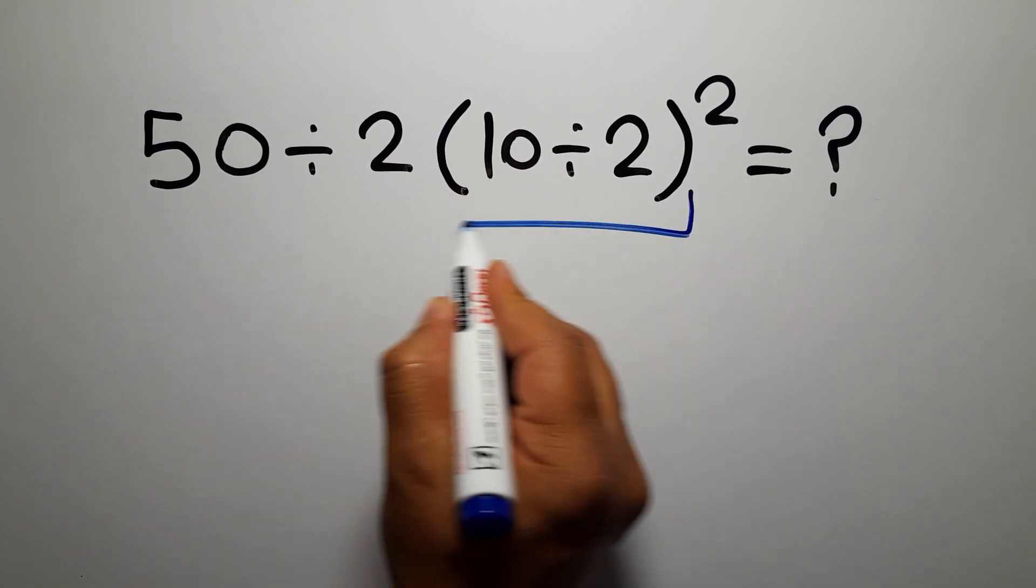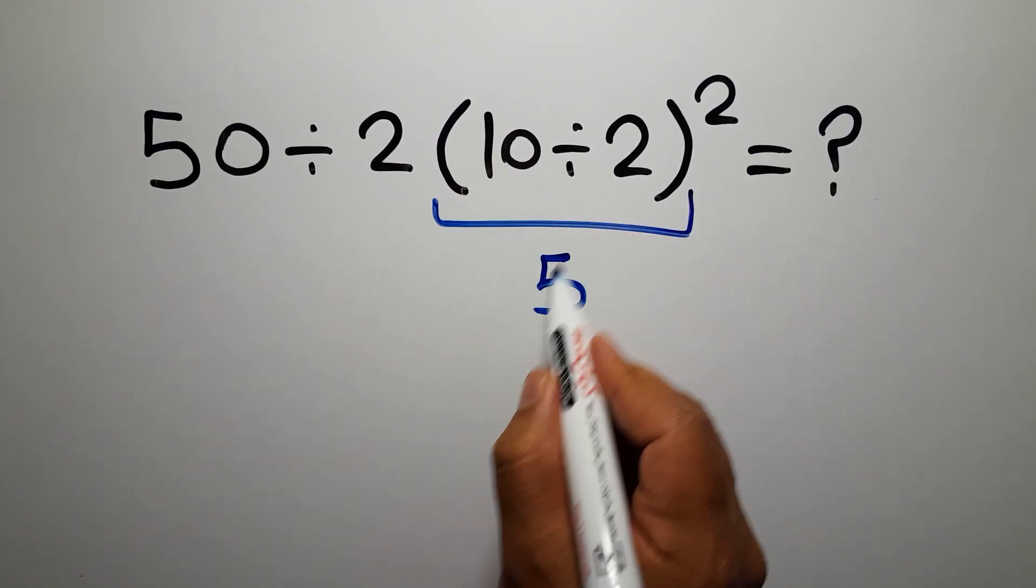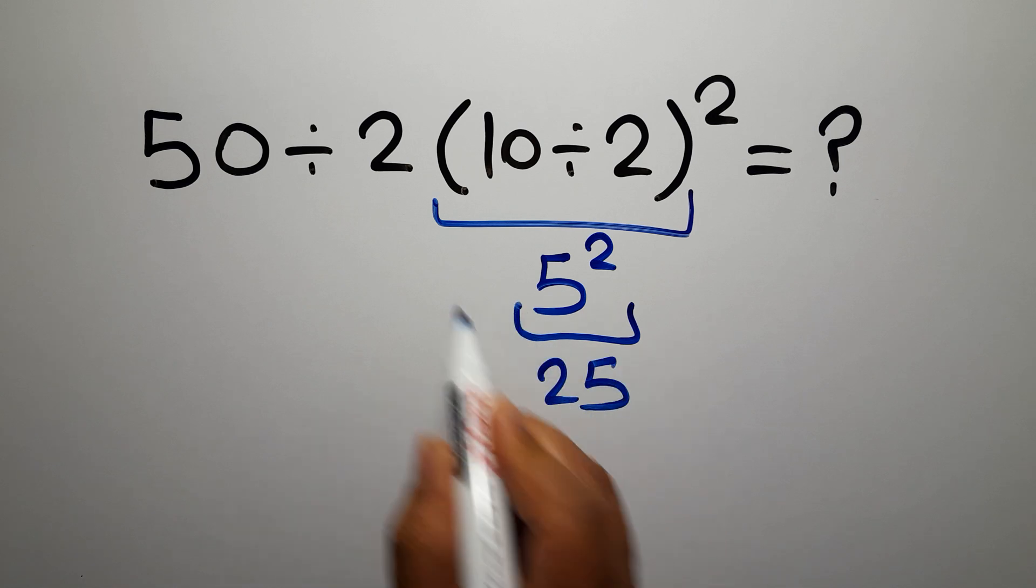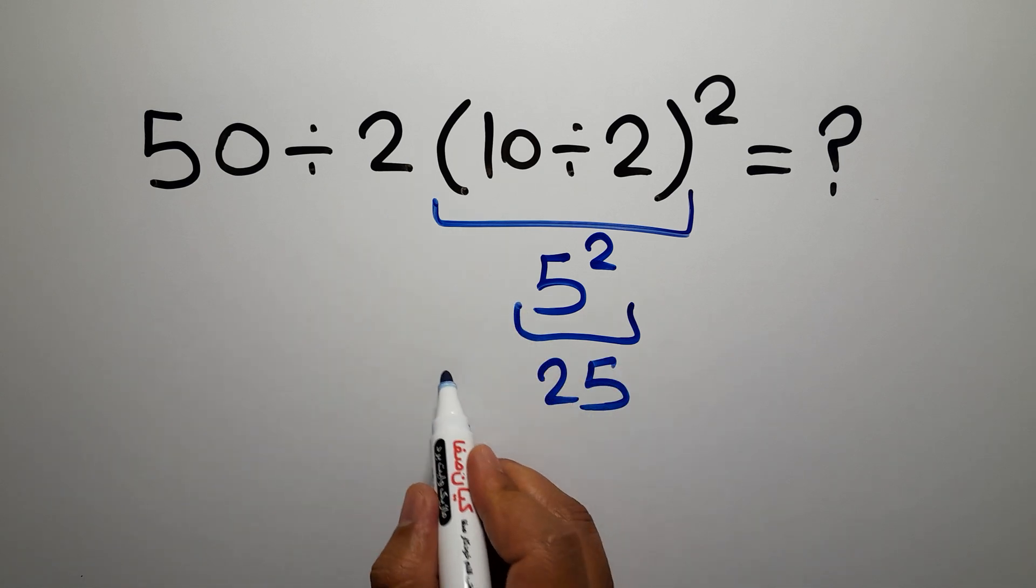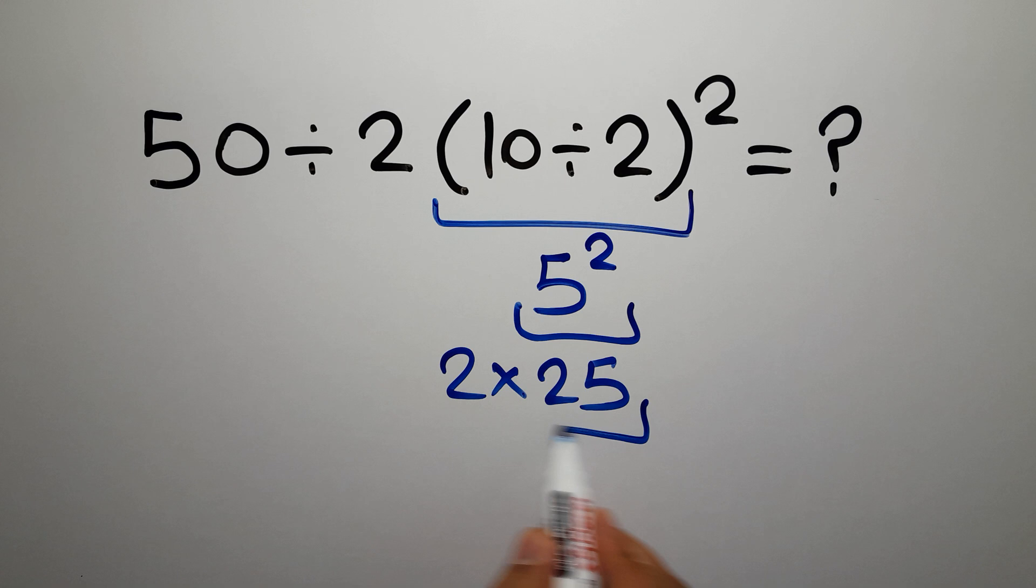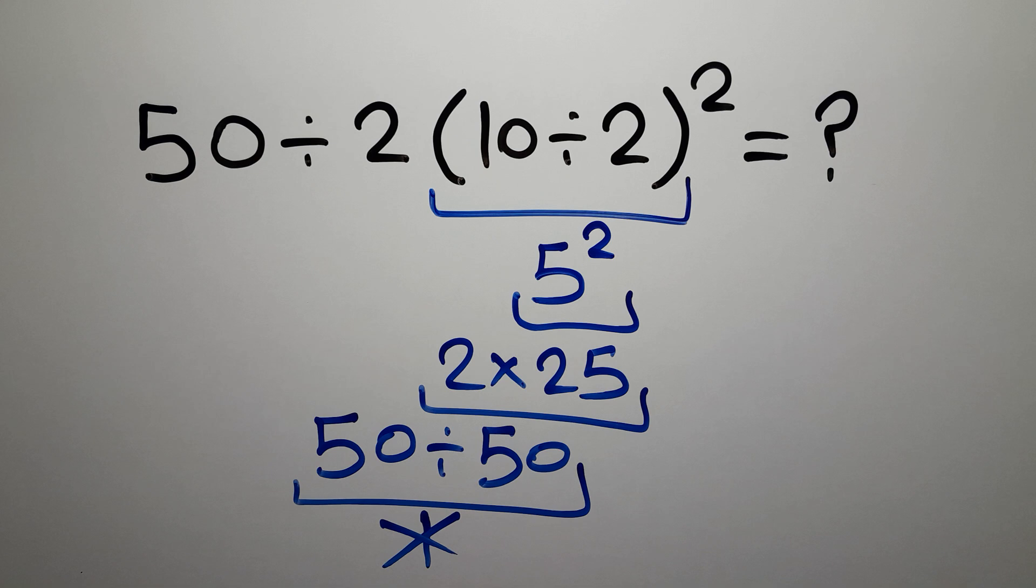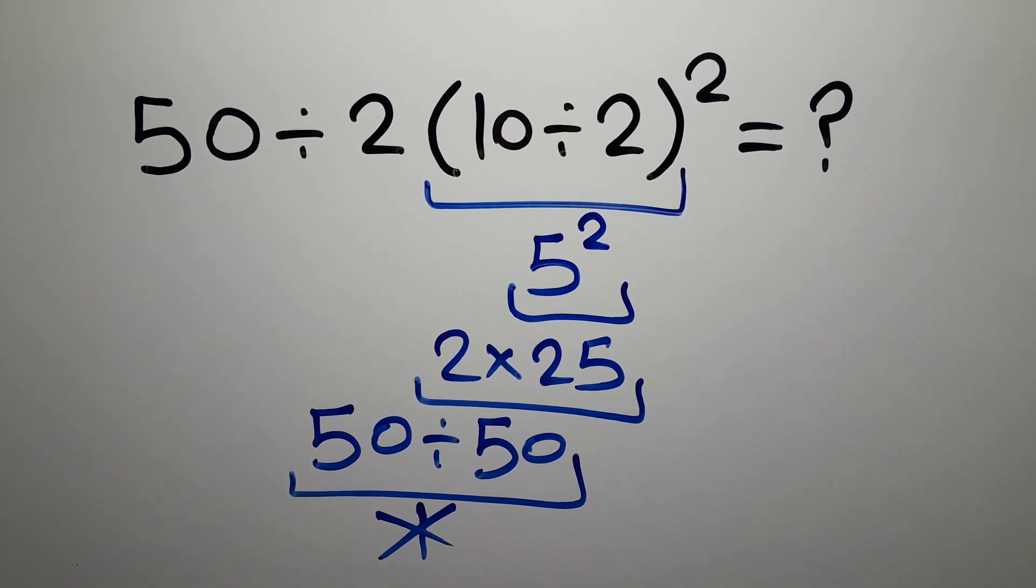10 divided by 2 is 5, so 5 squared equals 25, and 2 times 25 gives us 50. Then 50 divided by 50 equals 1. But this answer is not correct because according to the order of operations, which is...